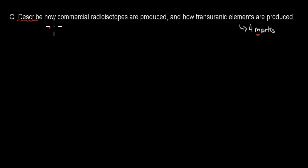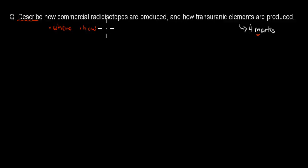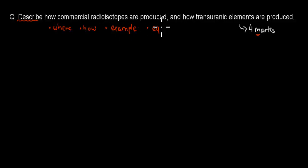It's always good to mention where this occurs — so where these are produced — and how they are produced. If possible, you should also give an example, such as one of the radioisotopes and how it gets produced. To be guaranteed full marks, it's always good to include equations as well. That should give you the four marks most definitely.